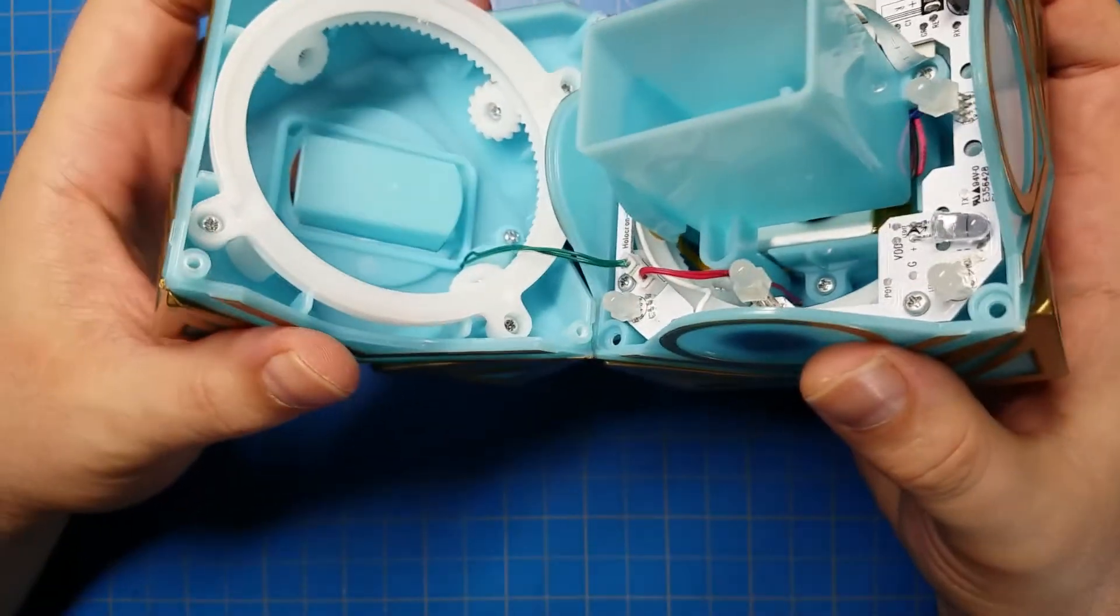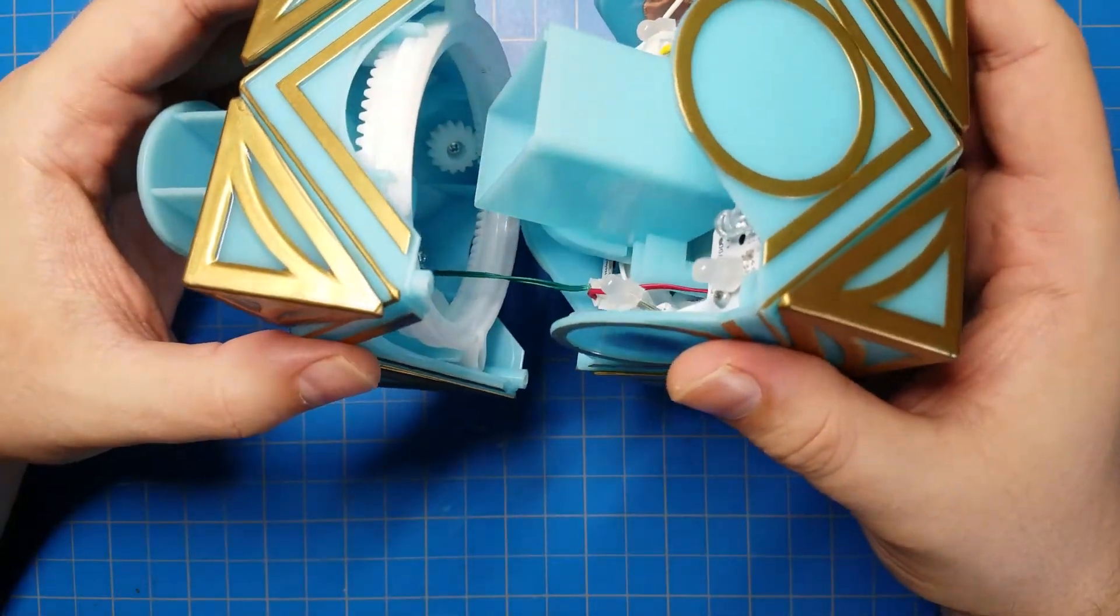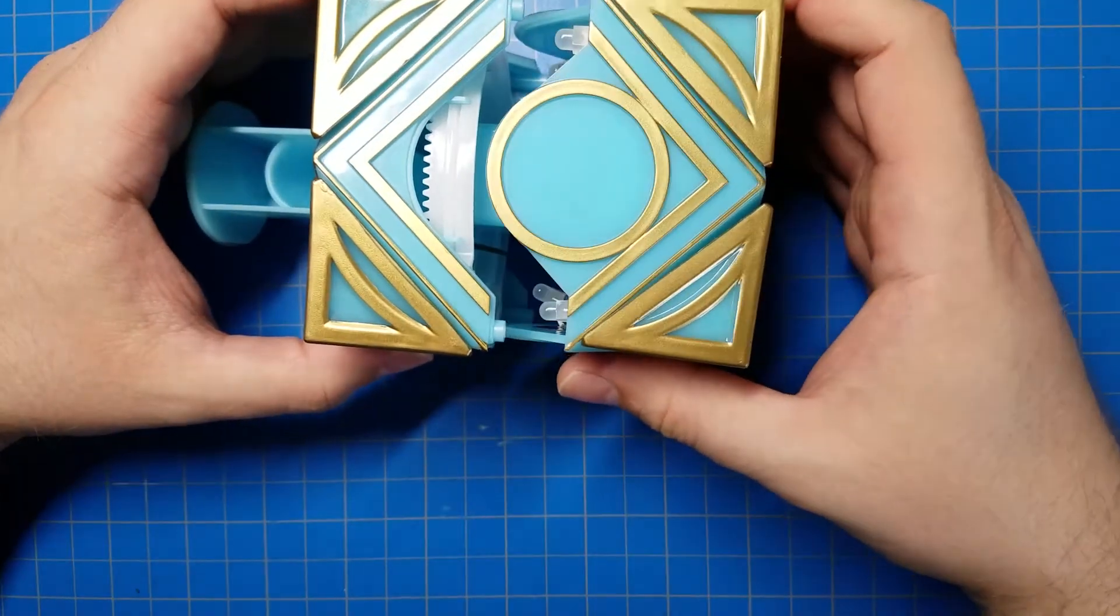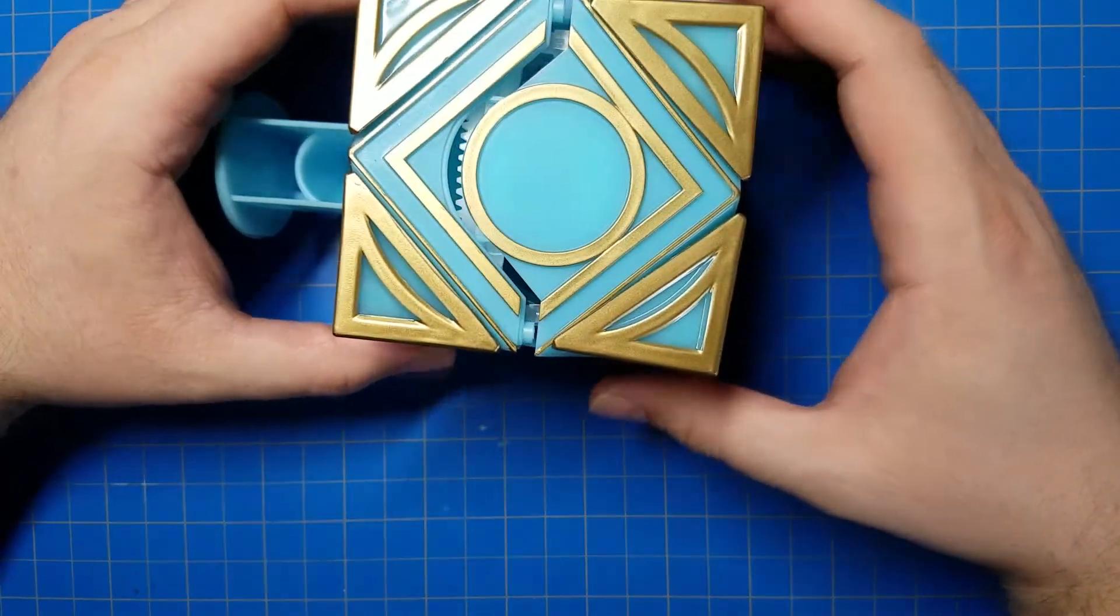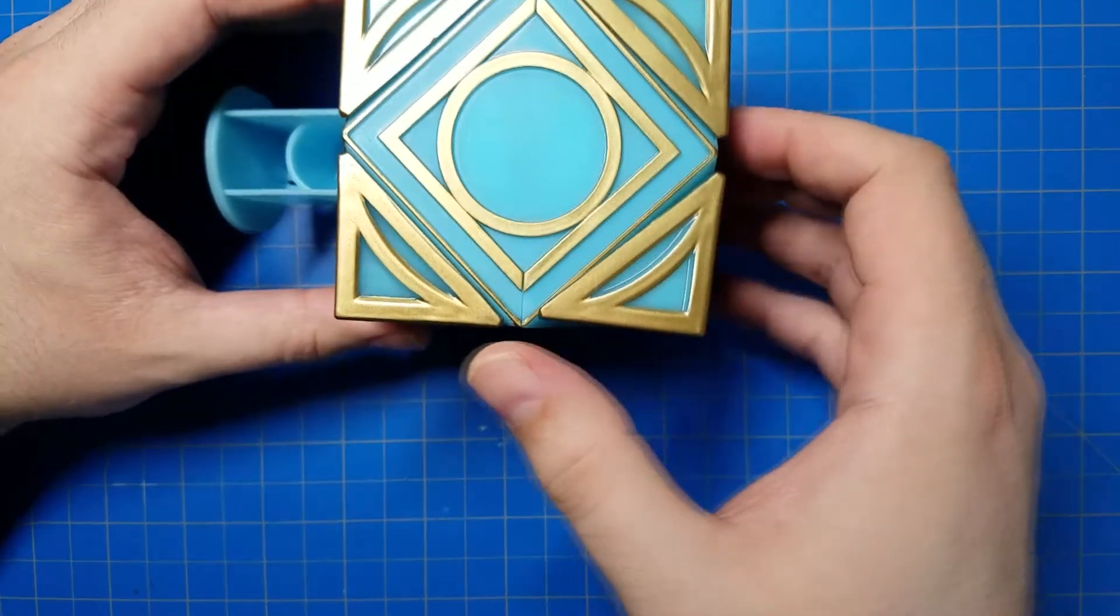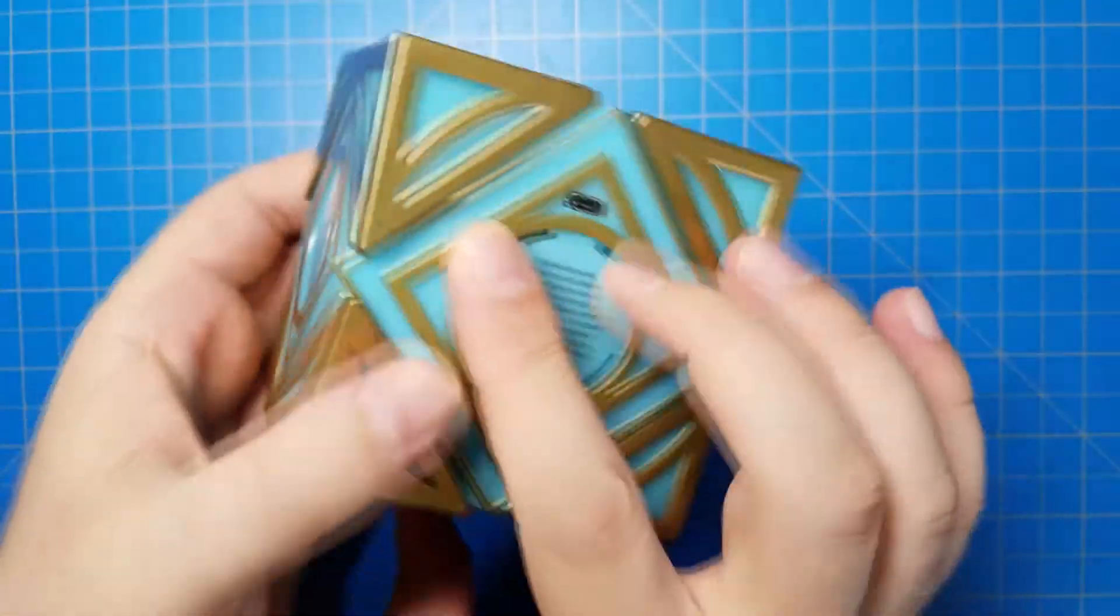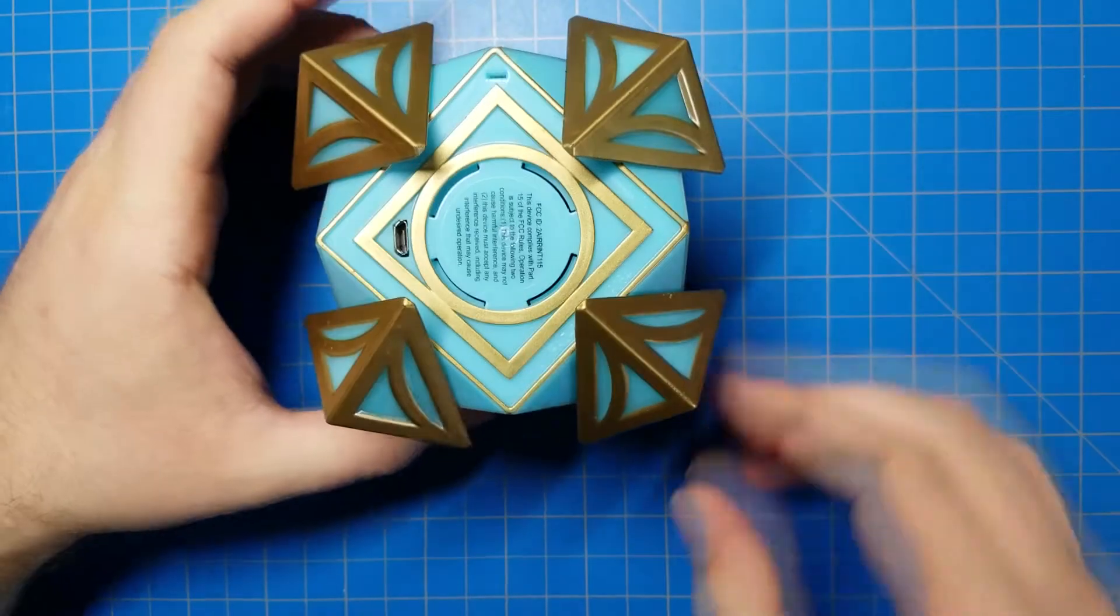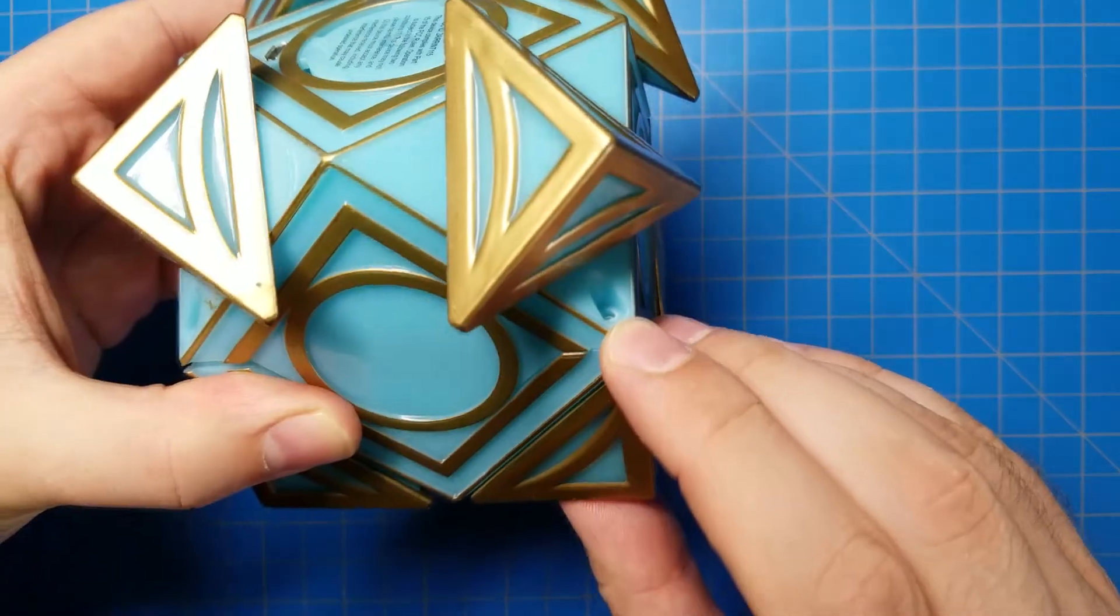So now I just need to sort of line things up here. I can put both halves on the ground here, on the table, and just sort of bring them together like so. Now I'll close the door. Everything is lined up back together. Now I just need to turn these corners on the micro USB side and put the screws back in.